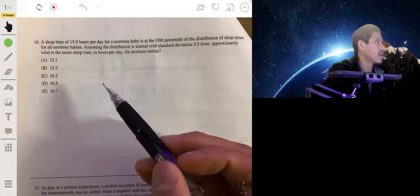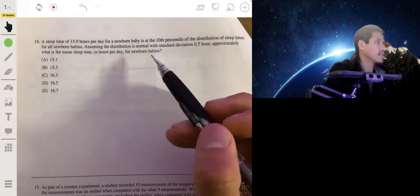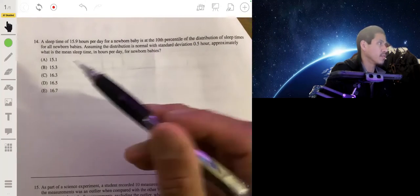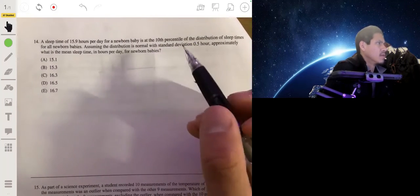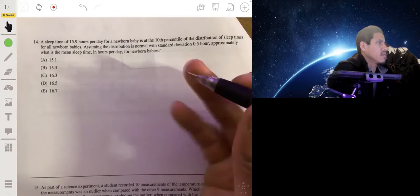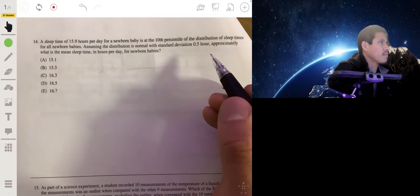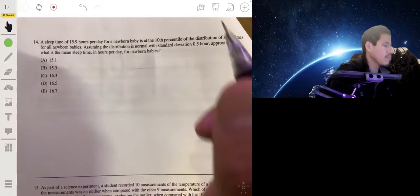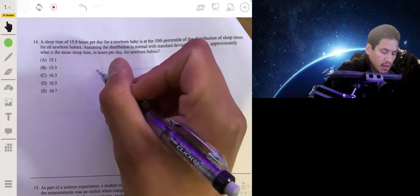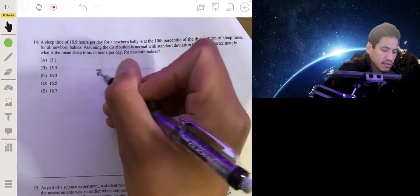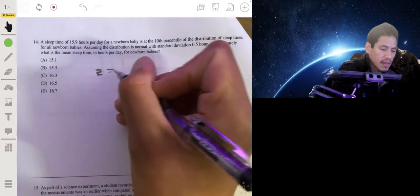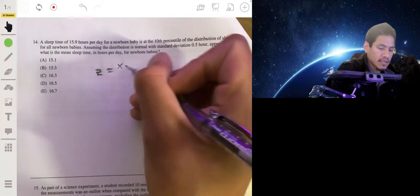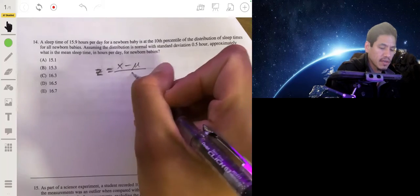Alright, mean sleep time at 15.9 hours per day for newborn babies, the 10 percentile of the distribution of sleep times for all newborns. So if we assume that distribution is normal and standard deviation is 0.5 hours, approximately what does it mean sleep time in hours per day for newborn babies? Alright, so let's go back and remember what standardized z-score is, and that would be equal to the data value or x minus the mean over the standard deviation.